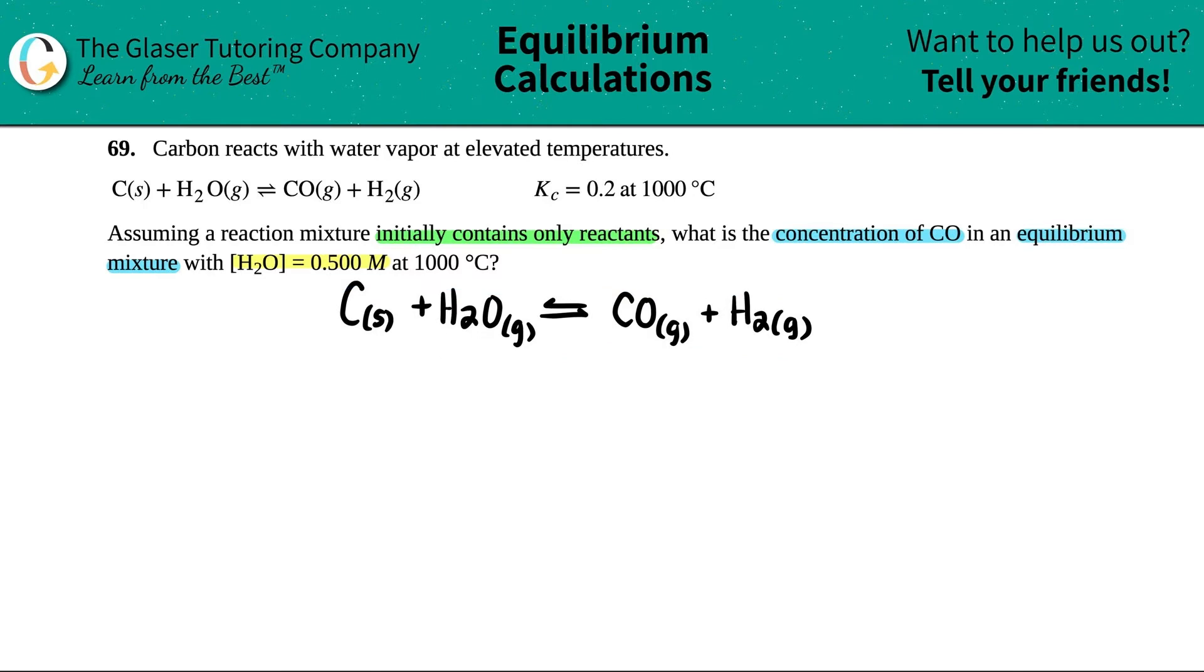Now, if we read this question again carefully, we notice that they said assuming a reaction mixture initially contains only reactants. The keyword here is that they're talking about what happened at the start of the equation. If you see this word initially, or initial, or at the start, we should make an ICE table. Some teachers call it a RICE table, but I like to call it ICE.